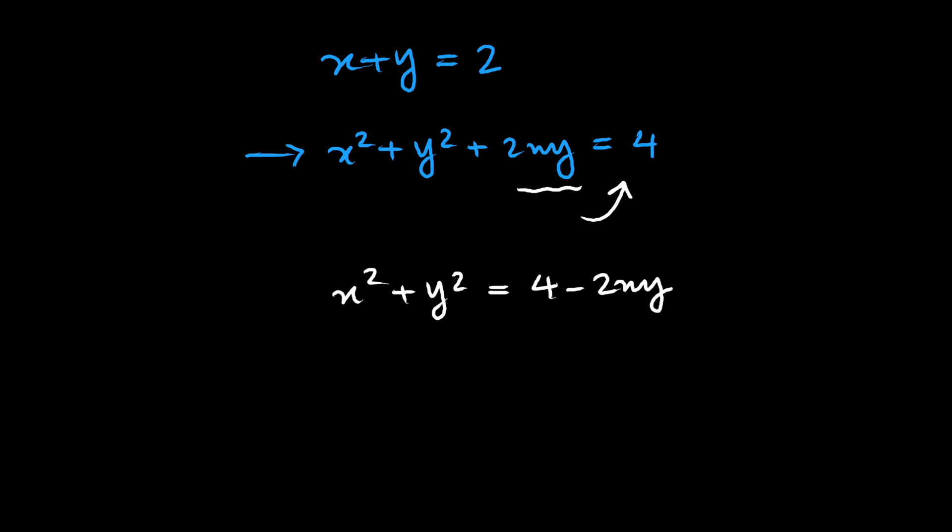And then now let's square both sides to get x to the fourth plus y to the fourth plus 2 x squared y squared equals 16 minus 16xy, and then plus four times x squared y squared.